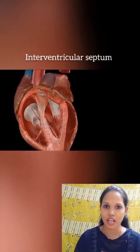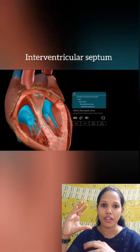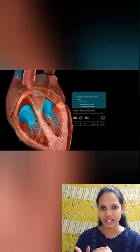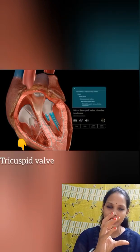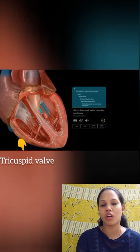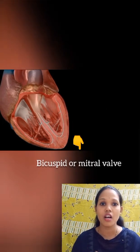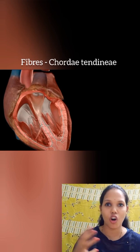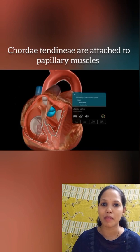Now let's talk about the valves present in the heart. The right auricle is separated from the right ventricle through a valve called the tricuspid valve. Similarly, the left auricle is separated from the left ventricle through a valve called the bicuspid or mitral valve. Both of these valves are attached to the heart by fibres called chordae tendinae, which are attached to the heart through papillary muscles.